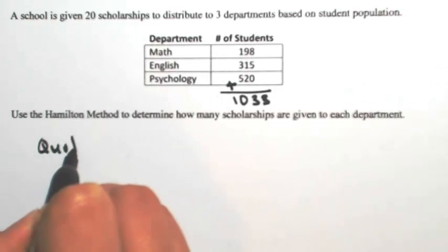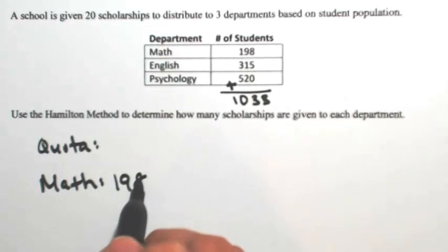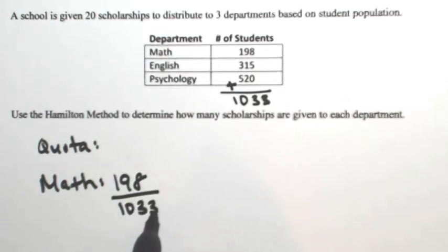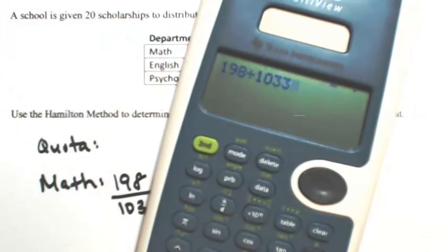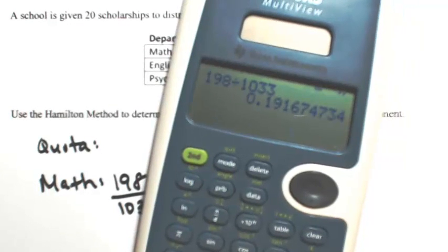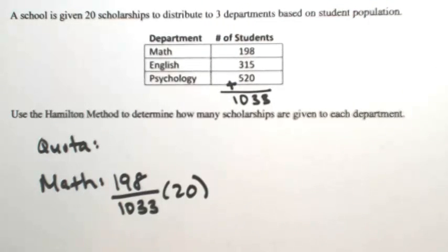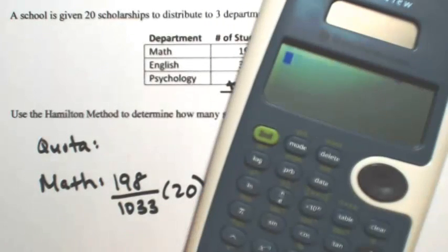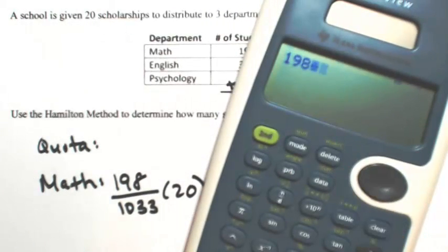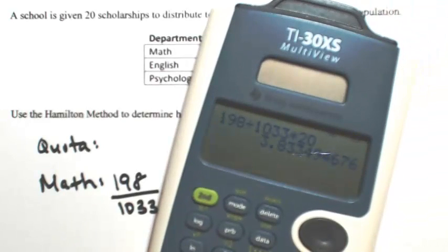To figure out each quota, we'll start with math. We're going to take the 198 students and divide it by the entire population. So that would be 198 divided by 1,033, which is about 19%. That means the math department should get 19% of the scholarships, so we multiply this by 20. So 198 divided by 1,033 times 20 gives us a quota of about 3.833.